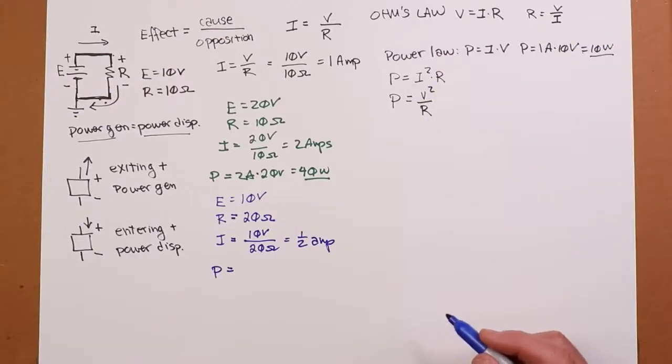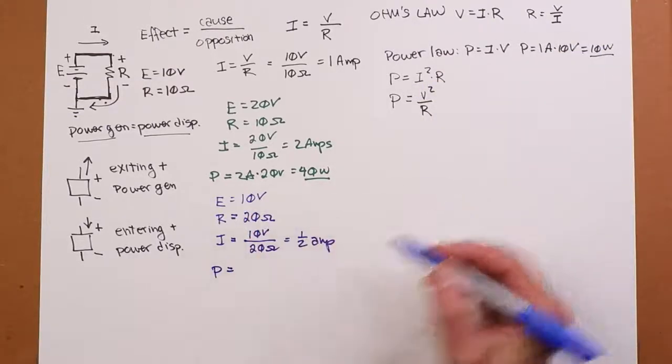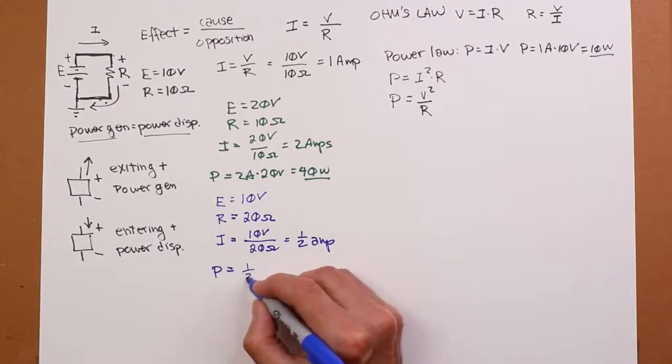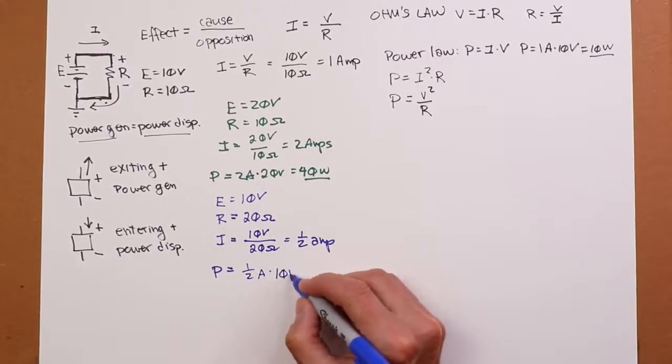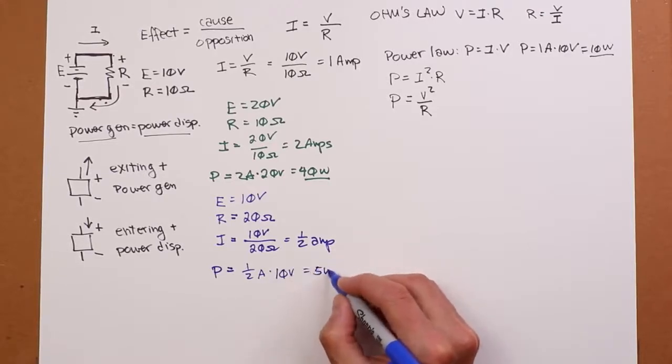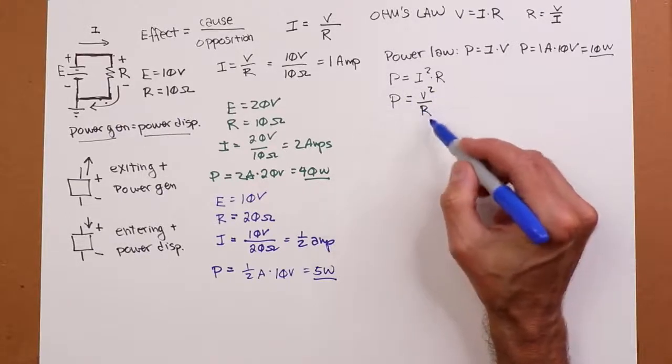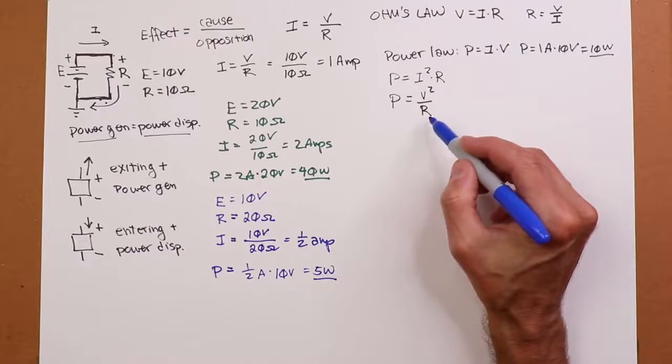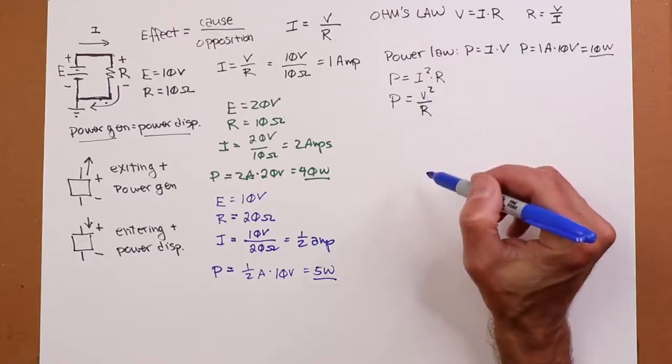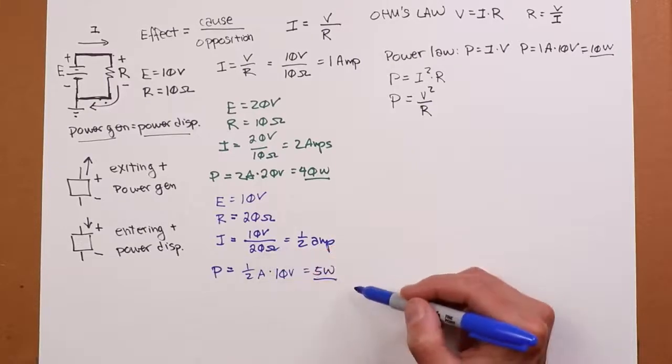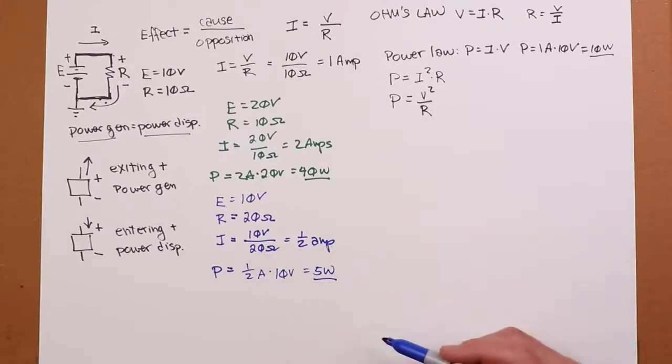What's the power? Well, we could do it any one of these ways, but since we have the current and the voltage, I might as well just use I times V, and we have half an amp times 10 volts, which is 5 watts. All right, so this equation indicates that the power is going to be an inverse relation with resistance as far as the voltage is concerned. So if we double up the resistance, we should halve the power, and that's exactly what we see going on here.